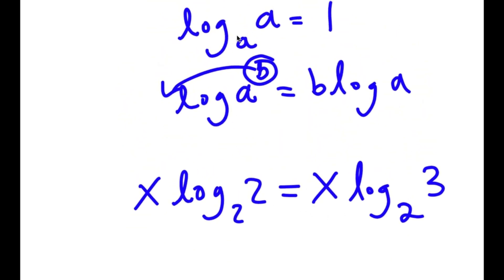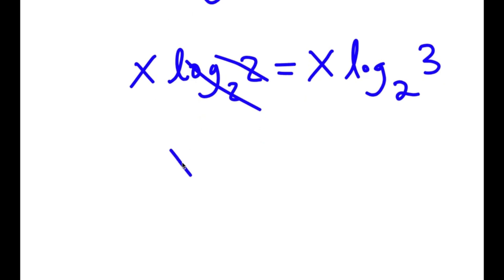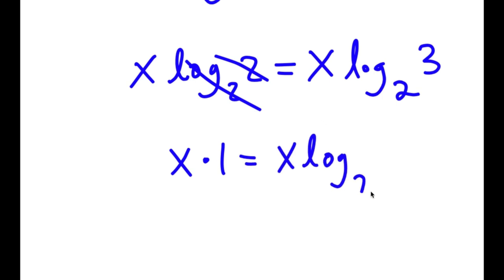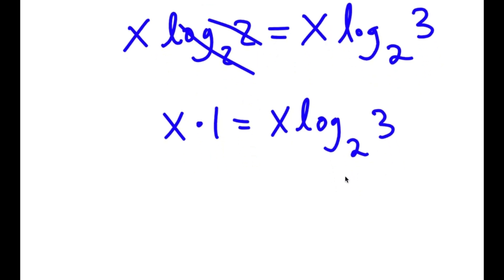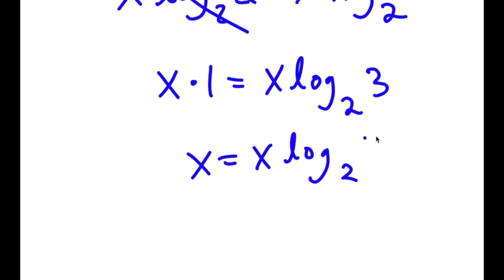Remember, if I have something in the form log base a of a, this is equal to 1. So log base 2 of 2 cancels out, and I get x times 1 is equal to x times log base 2 of 3. And x times 1 is simply x, so I get x is equal to x times log base 2 of 3.